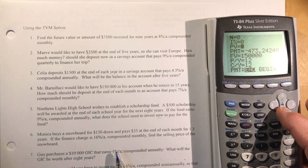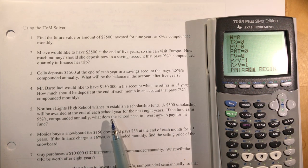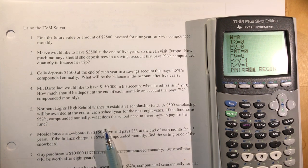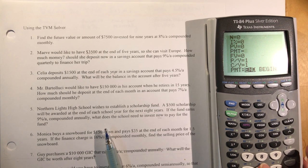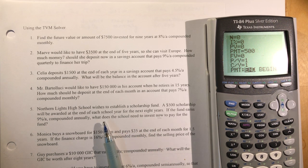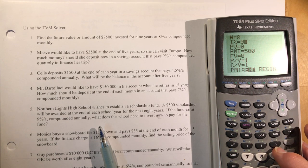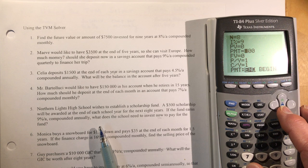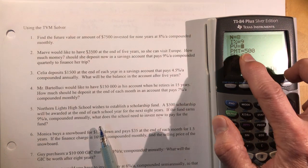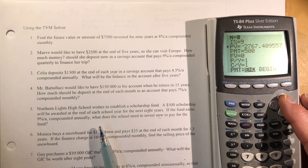Northern Lights High School wishes to establish a scholarship fund. A $500 scholarship will be awarded at the end of each year. That's a payment. So they're going to make a payment of $500. It's money coming out, so it should be positive. They want to know how much to put in now. It's eight years, so my n is 8. The interest rate is 9%. I'm trying to find the present value. It's one and one. The payment was $500. I do alpha, enter. So they need $2,767.41.